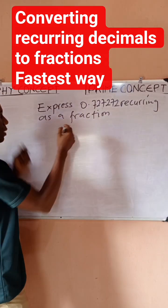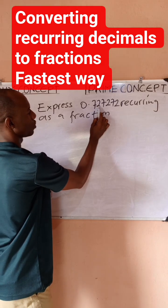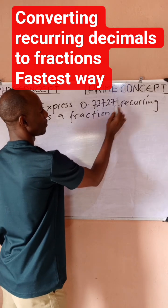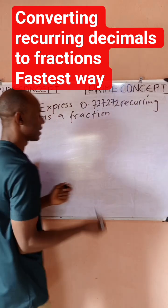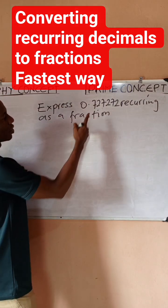Now I want to express this. This is a recurring decimal because you have 7, 2, 7, 2, 7, 2—it keeps recurring or repeating. I want to change it to a fraction. So simple, you just write the recurring number which is 72.